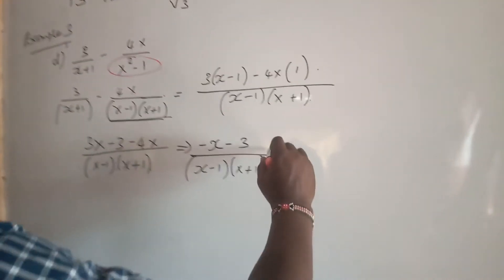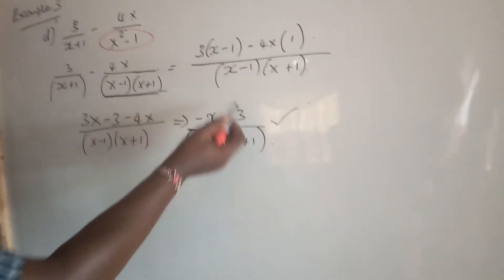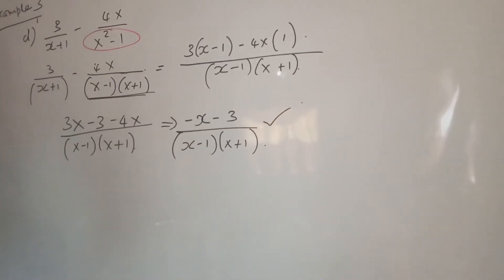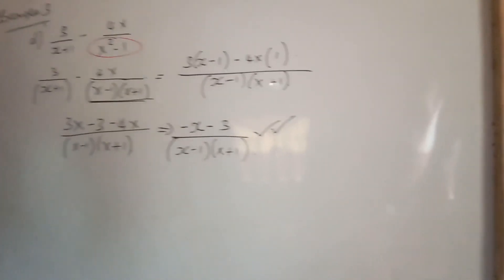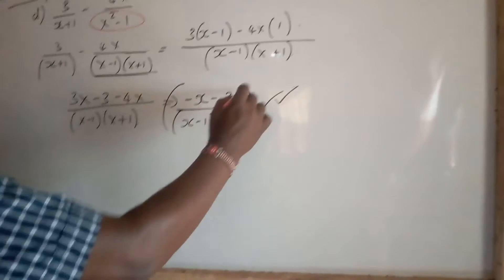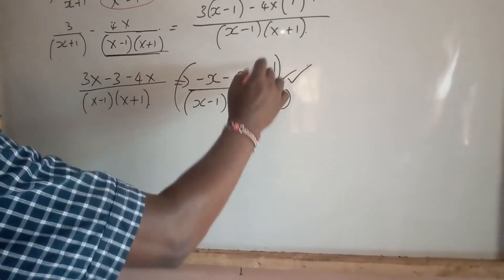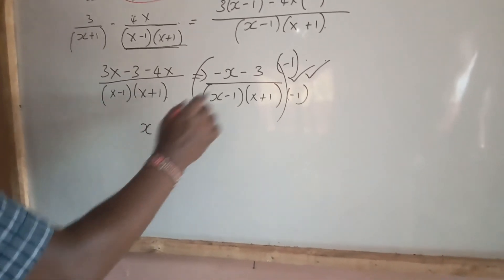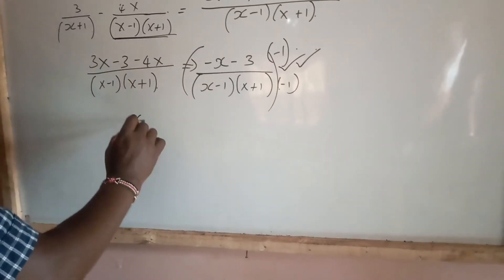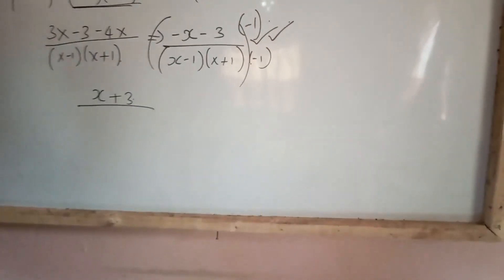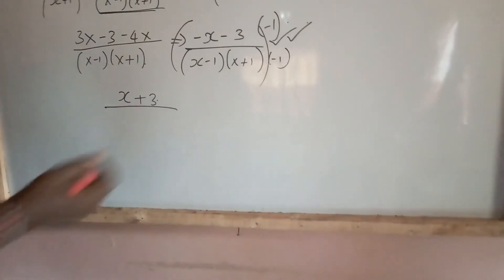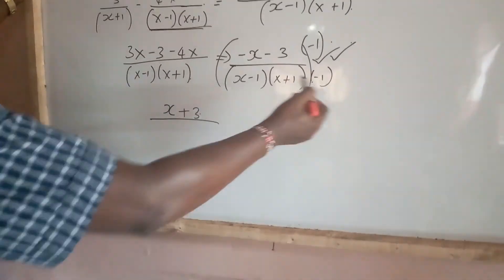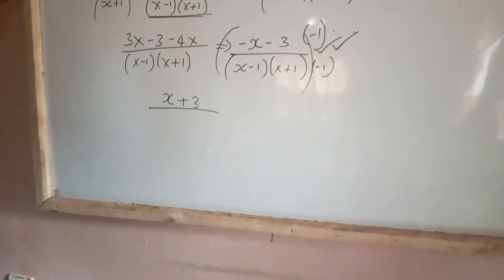That is the final submission. If you want to write the numerator so it doesn't start with negative, then we can multiply by negative 1 on both sides. That answer is quite competent, but if you want to write differently, you can multiply by negative 1 at the numerator and negative 1 at the denominator, so that negative x times negative 1 becomes x, and negative 3 times negative 1 becomes positive 3.